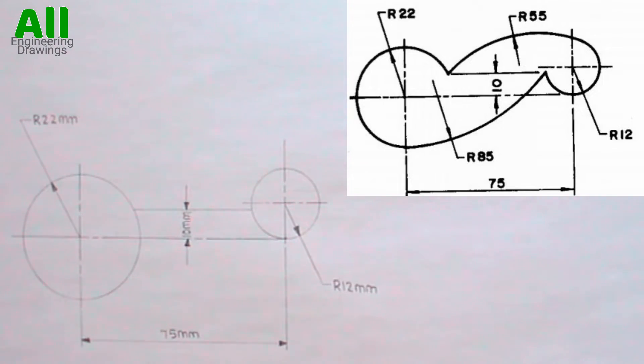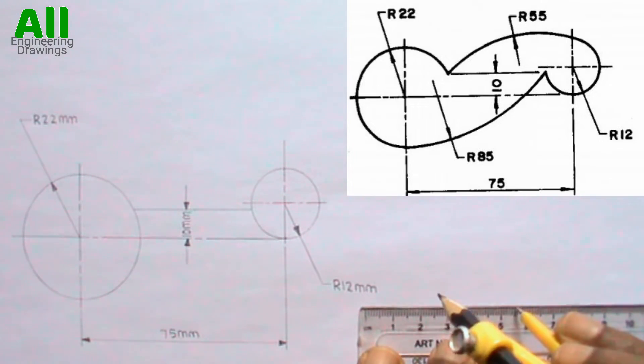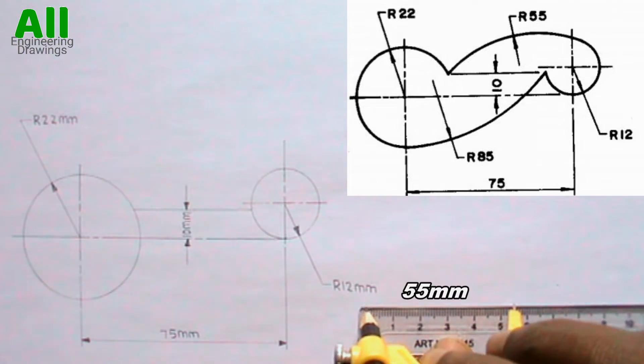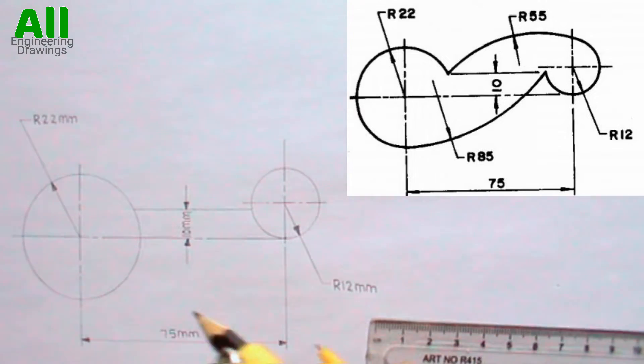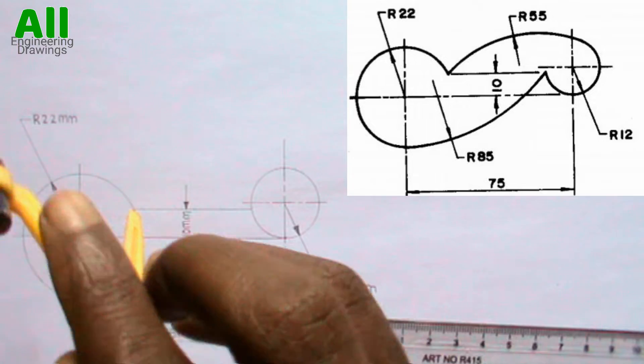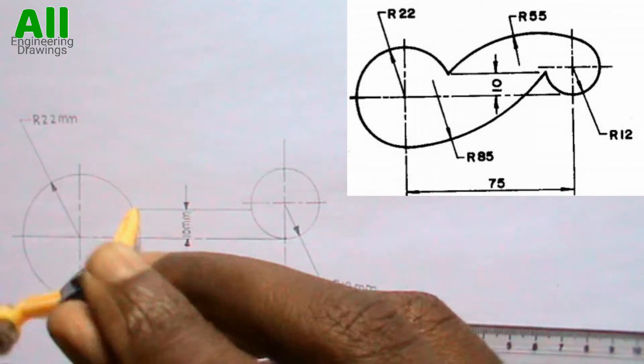To draw the upper tangential arc, you have to extend your compass to a radius of 55mm. Then you have to place your compass on this point. Then you have to cut an arc this way.